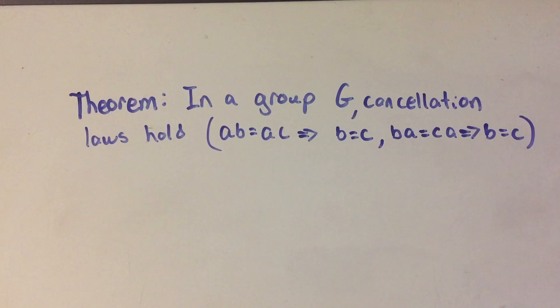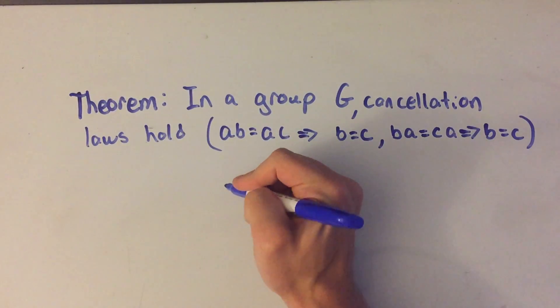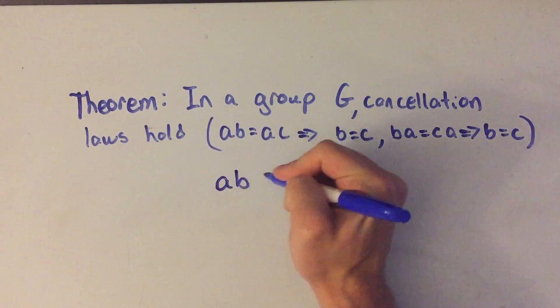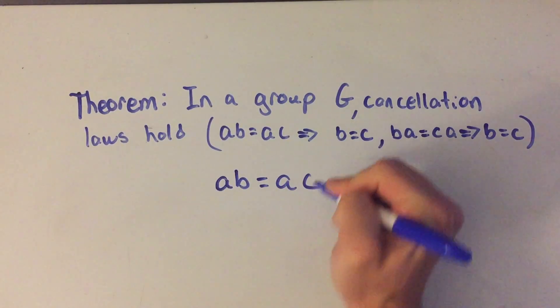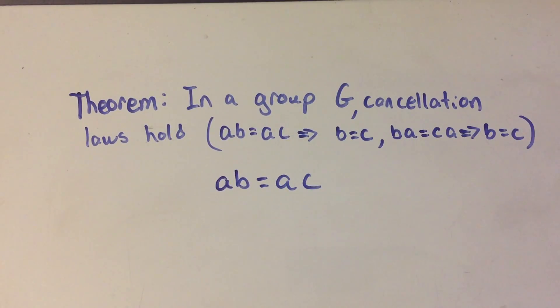So how would you go about proving this? Well, it's not too bad. Let's just take this first equation here. I've got a times b equals a times c and what I'm gonna do is I'm just gonna take the a inverse on the left of both sides.